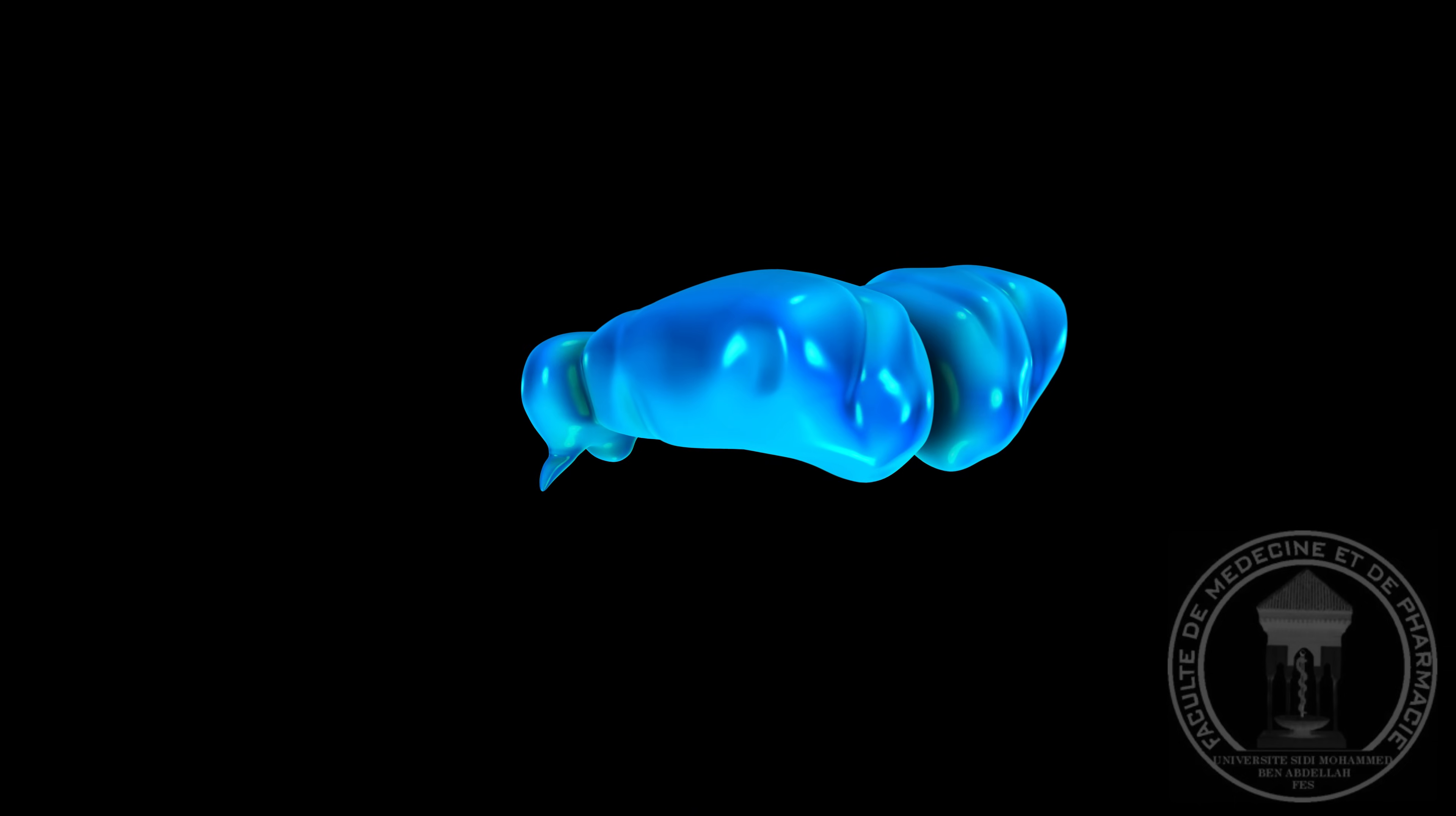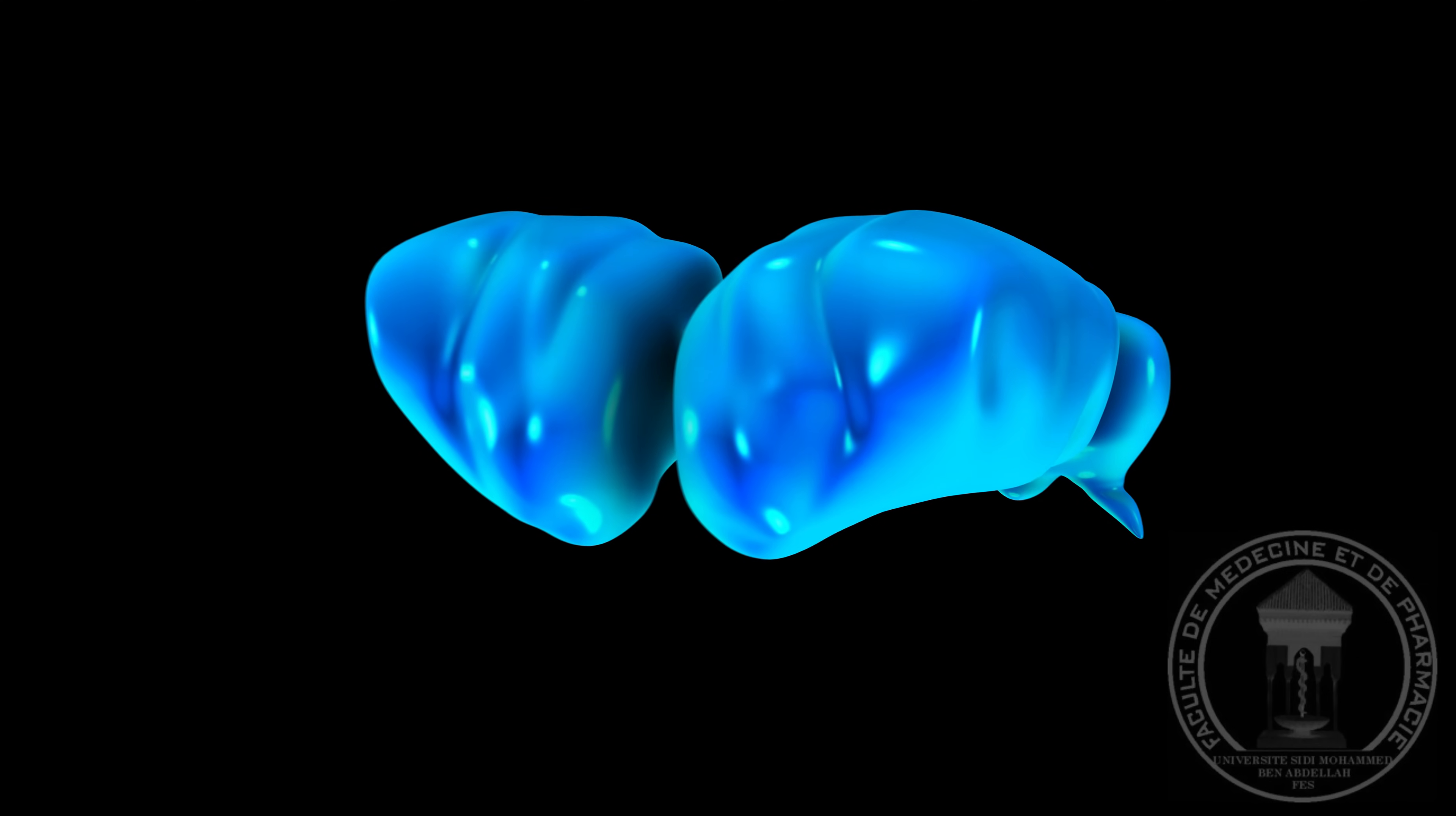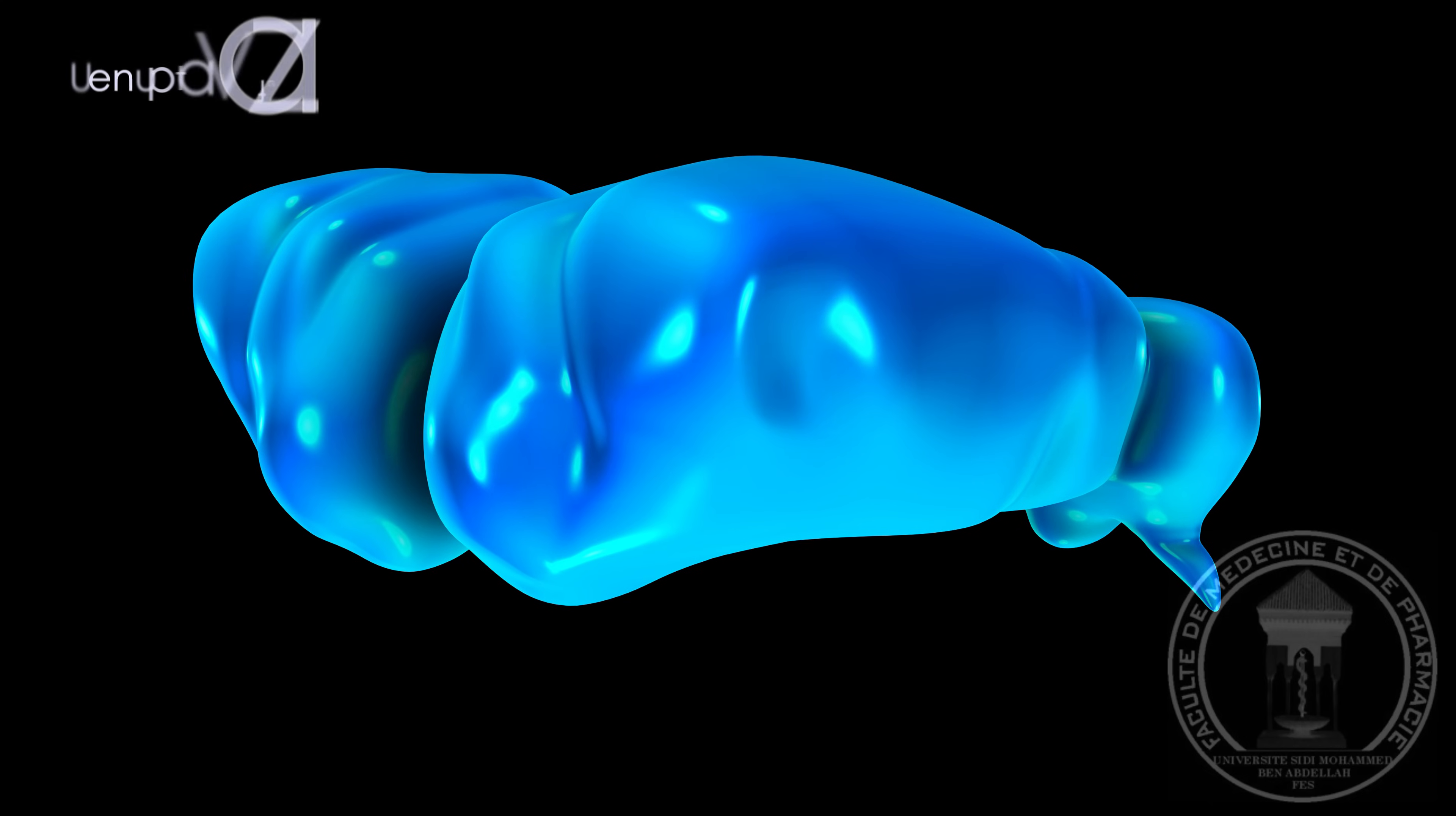The thalamus is a nuclear complex that occupies most of the diencephalon. It acts essentially as a relay to the vast majority of sensory inputs that go up to the cerebral cortex. It also plays a very important role in movements and emotions.